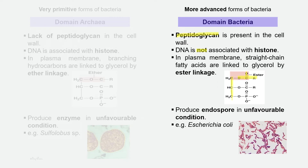If the environment becomes unfavorable to the bacteria, these bacteria will produce endospores to generate a new generation. One example of domain Bacteria is E. coli.